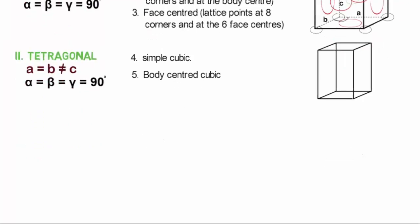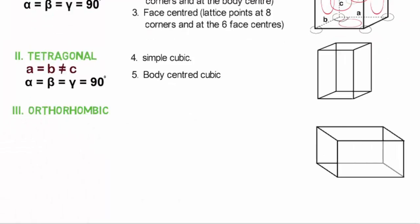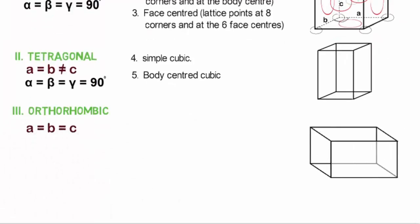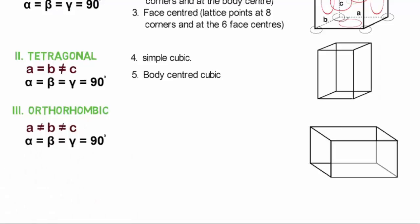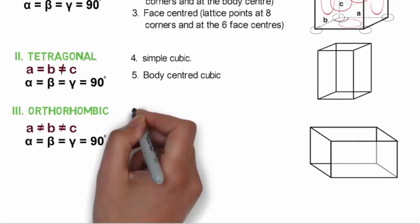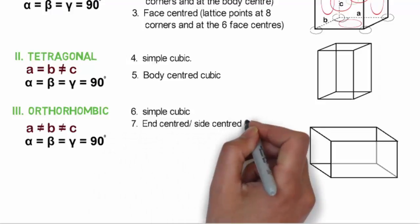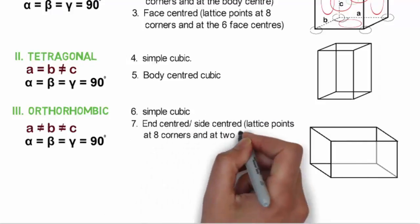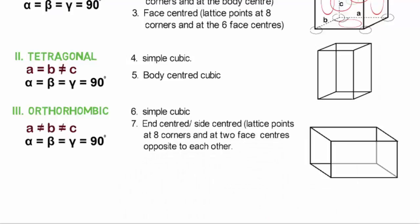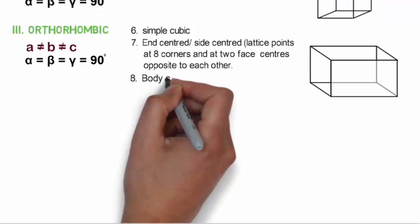The third crystal system is orthorhombic, where none of the side pairs are equal but alpha, beta and gamma angles are all equal to 90 degrees. It can have three possible space lattices: simple cubic, end-centered cubic where lattice points are at 8 corners and at two face centers opposite to each other, and also body centered lattice.